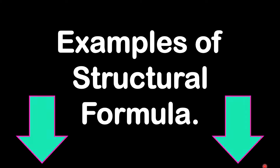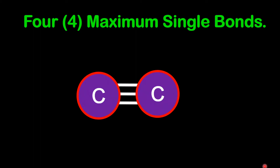Now let's look at some examples of structural formulas for alkynes. Before we begin, I want to remind you that for any given carbon atom, there must be a maximum of four single bonds — in other words, you must have four lines around each carbon.